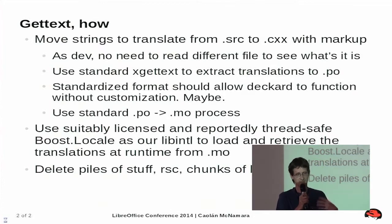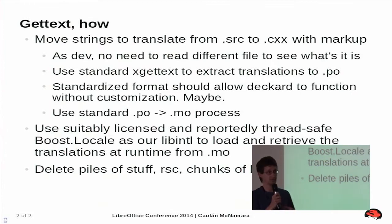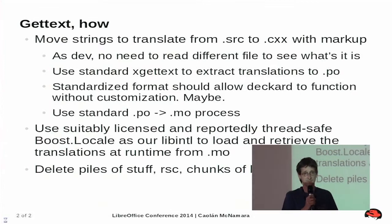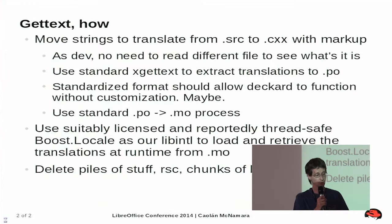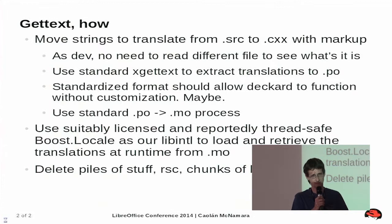Then use the standard .po to .mo process, which leaves the question of how we load the resulting translations. GetText itself isn't licensed properly, but Boost does have boost.locale, which comes with a loader for the .mo file format and iconv replacement, which is apparently suitably licensed and reportedly thread-safe. We'd use that instead.